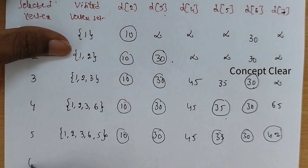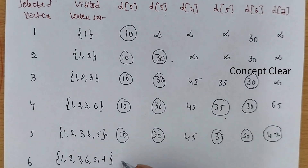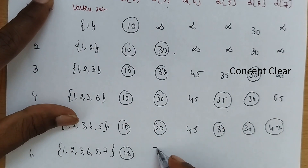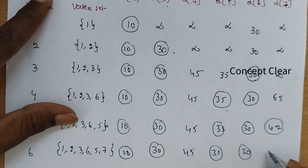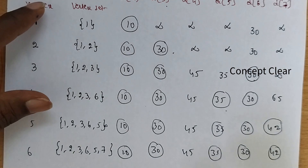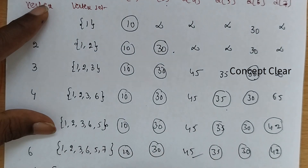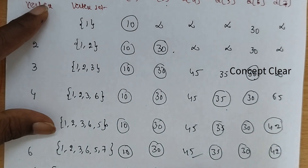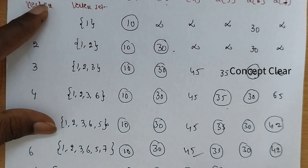So we select vertex 7 with cost 42. Visited: 1, 2, 3, 6, 5, 7. Values: d(2)=10, d(3)=30, d(4)=45, d(5)=35, d(6)=30, d(7)=42. The remaining unvisited vertex is 4, which is visited last. Final visited order: 1, 2, 3, 6, 5, 7, 4, with all costs 10, 30, 45, 35, 30, 42.